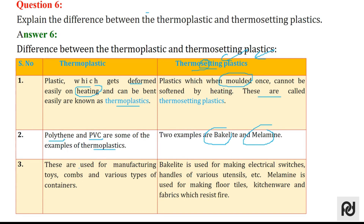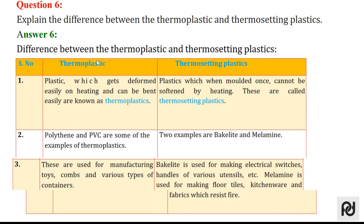Thermoplastics are used for manufacturing toys, combs, and various types of containers. Bakelite is used for making electrical switches and utensil handles. Melamine is used for floor tiles, kitchenware, etc.